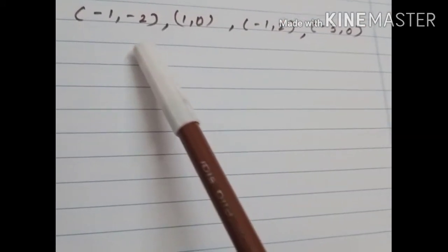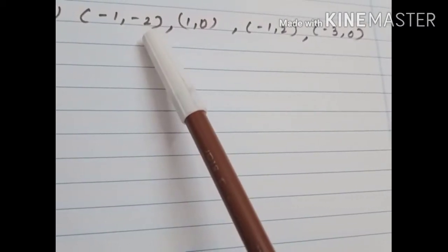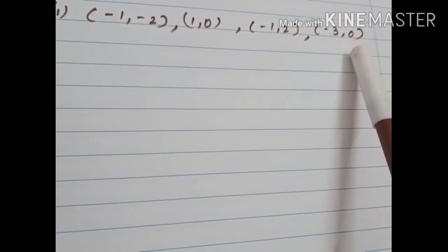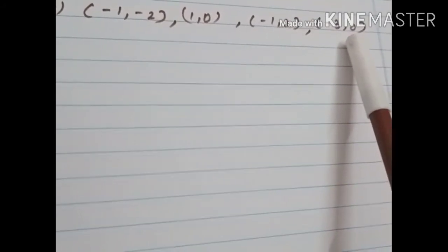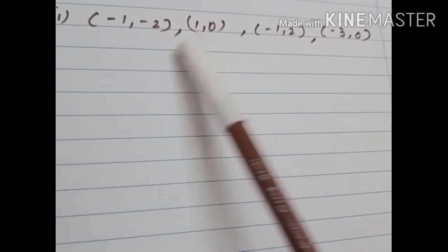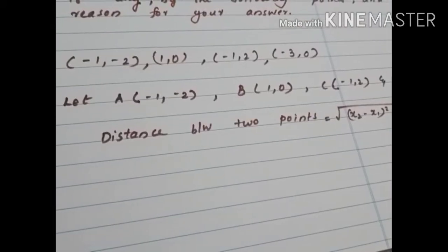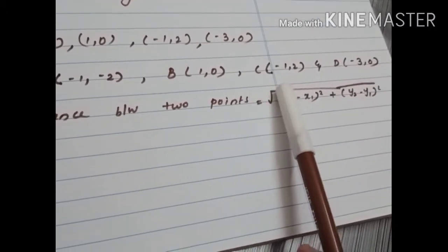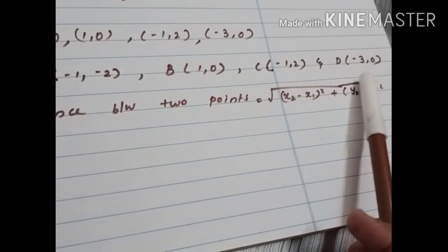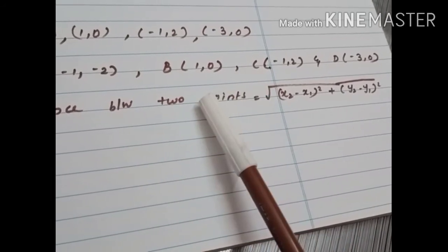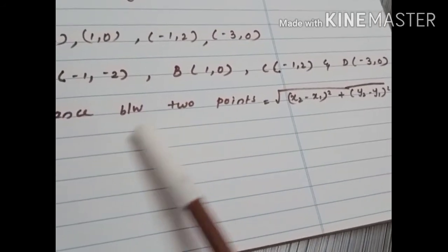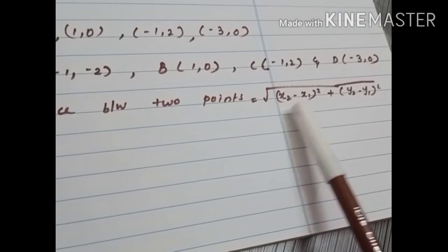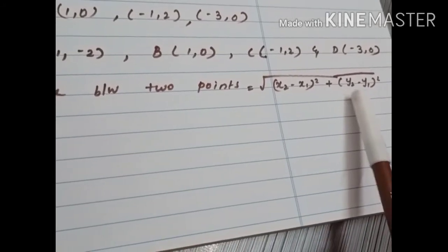For the first question, they have given 4 points: negative 1, negative 2; 1, 0; negative 1, 2; and negative 3, 0. The names are not given, so we can assign names. Let A(-1, -2), B(1, 0), C(-1, 2), and D(-3, 0). For this question we have to use the distance formula many times. The distance between 2 points is root of (x2 minus x1) whole square plus (y2 minus y1) whole square.